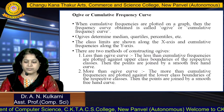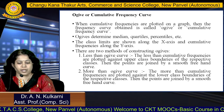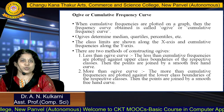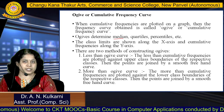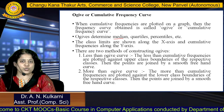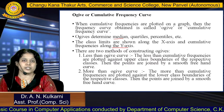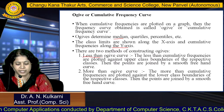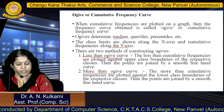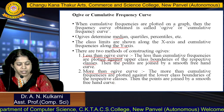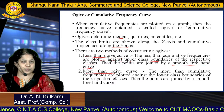Next is the ogive or cumulative frequency curve. When cumulative frequencies are plotted on a graph, the curve obtained is called an ogive or cumulative frequency curve. The ogive is used to determine median, quartiles, and percentiles. The class limits are shown along the x-axis and cumulative frequencies along the y-axis. There are two methods: the less-than ogive curve, where less-than cumulative frequencies are plotted against the upper class boundaries and the points joined by a smooth freehand curve.